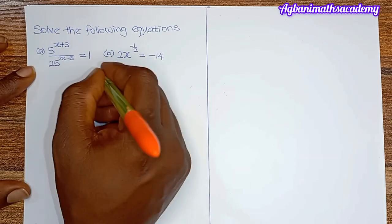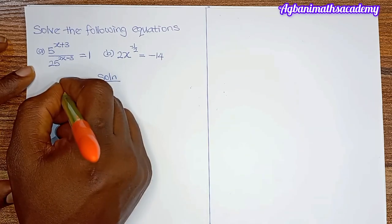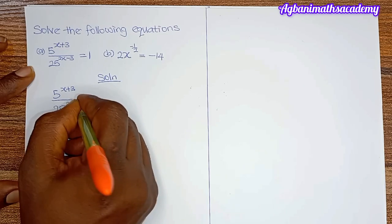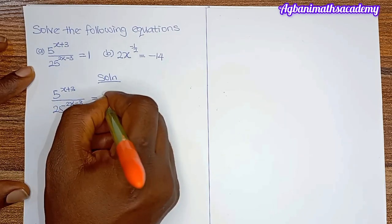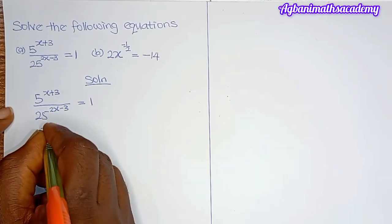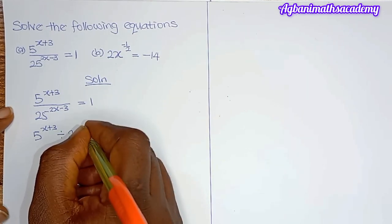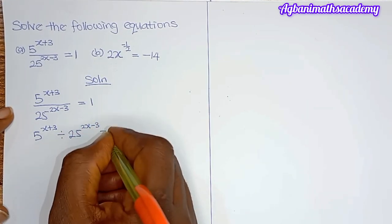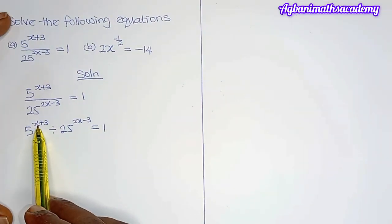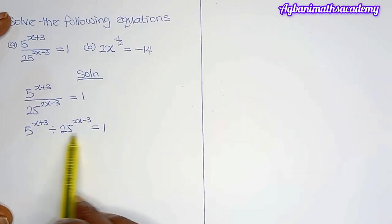So let's solve the first one. We have 5 to the power of x plus 3, all over 25 to the power of 2x minus 3, is equal to 1. We rewrite this arrangement: 5 to the power of x plus 3, divided by 25 to the power of 2x minus 3, equals 1. In this question we can see that the variable we are looking for is an exponent, so we need to ensure that the bases are the same.